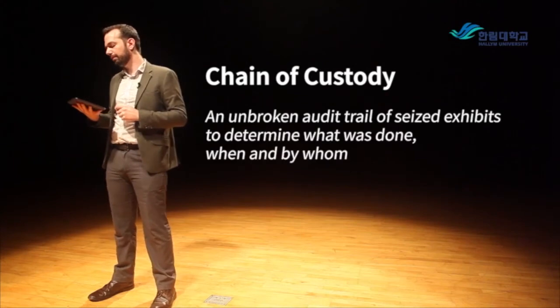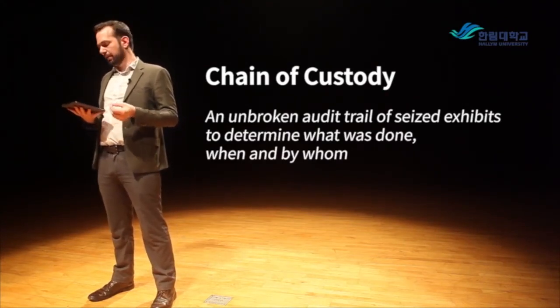Finally, chain of custody is very important for proving to court that we've taken all necessary procedures to ensure our evidence is reliable and has not been modified or tampered with. Chain of custody is an unbroken audit trail of seized exhibits to determine what was done, when, and by whom. It's the same concept as for traditional evidence, except digital evidence is easier to manipulate — anyone can come in and modify things. So we have to protect digital evidence and always know where the data is, who has access to it, and what they were doing with it.